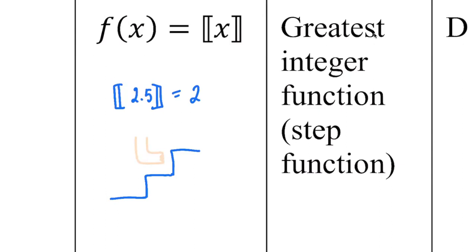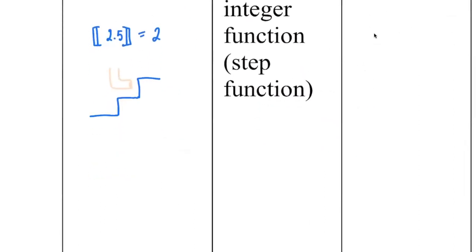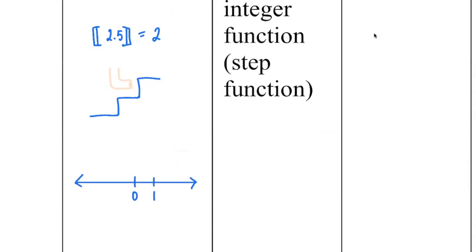It gets easier if you think about a number line — it really helps clear up some confusion. So let's say I have a number line right here with negative one, negative two, and negative three. Where is 2.5? Well, 2.5 is right here, and then it goes to the left — the previous integer.